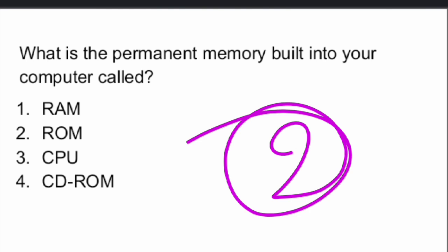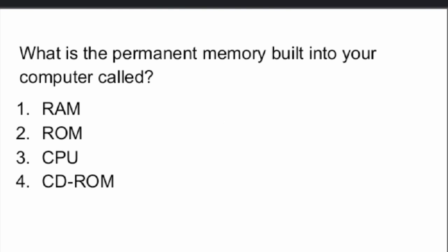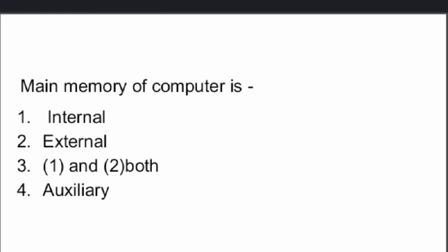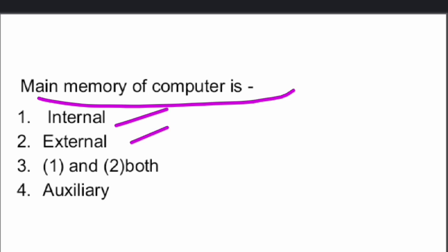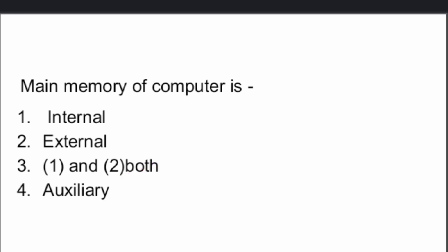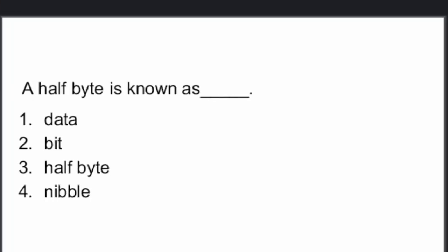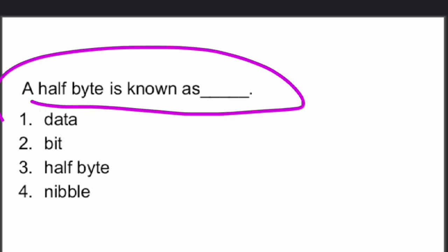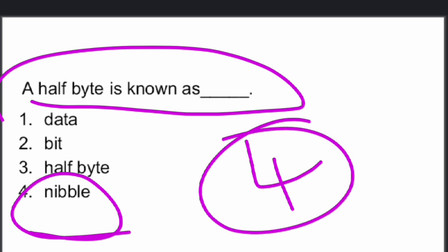Main memory of a computer is both internal and external — option three is the right answer. A half byte is called a nibble.